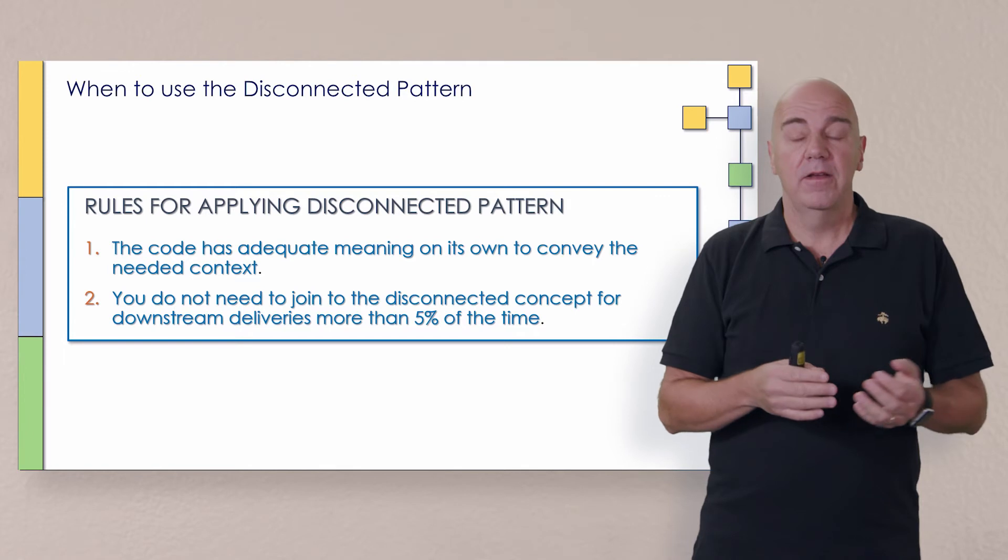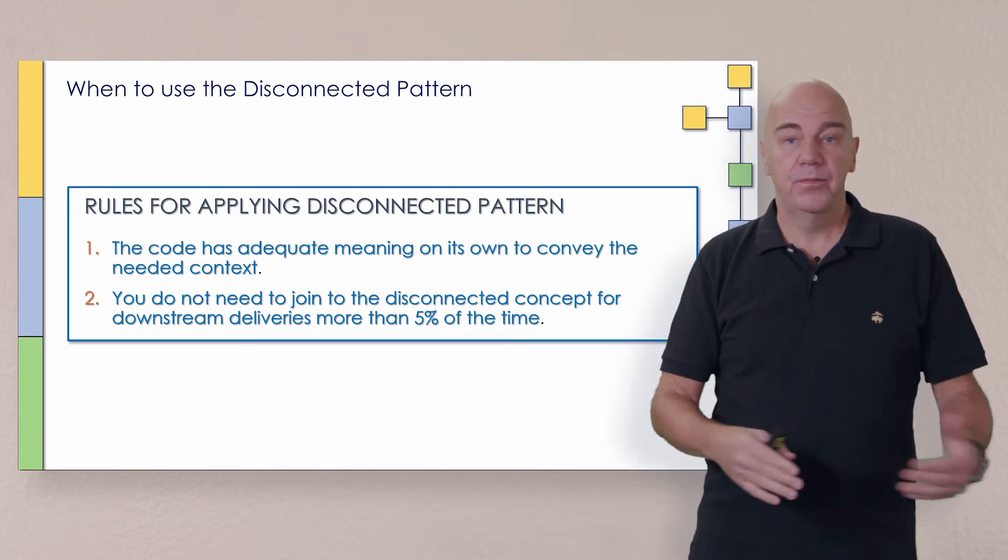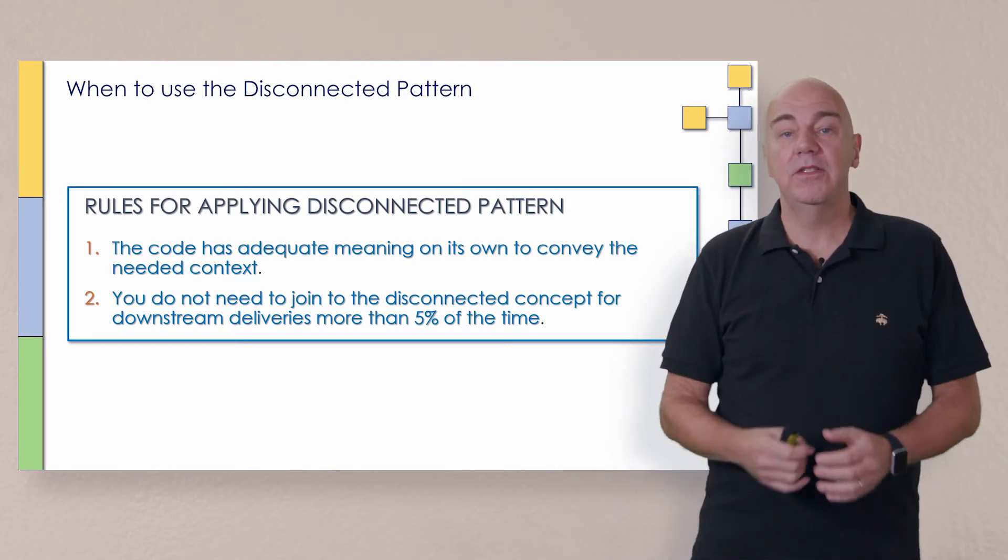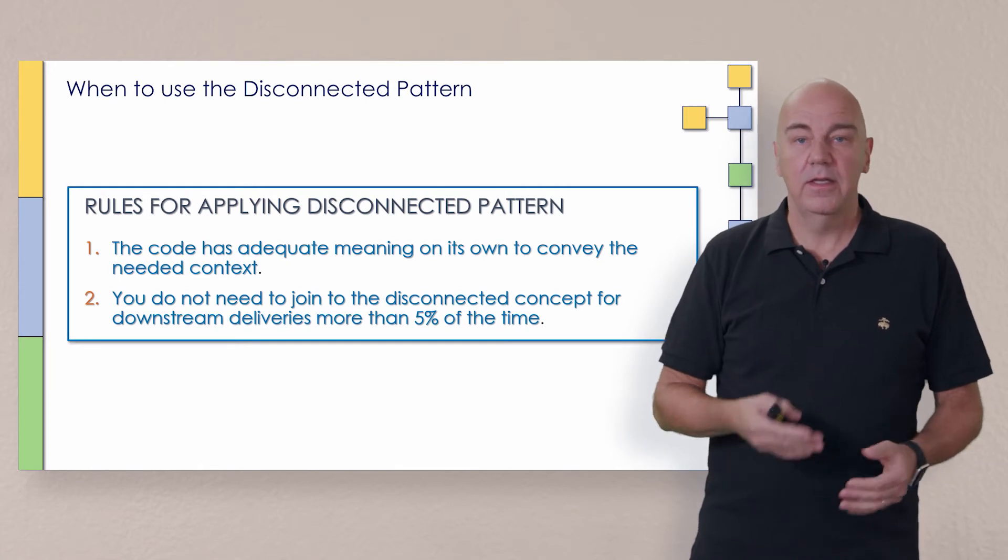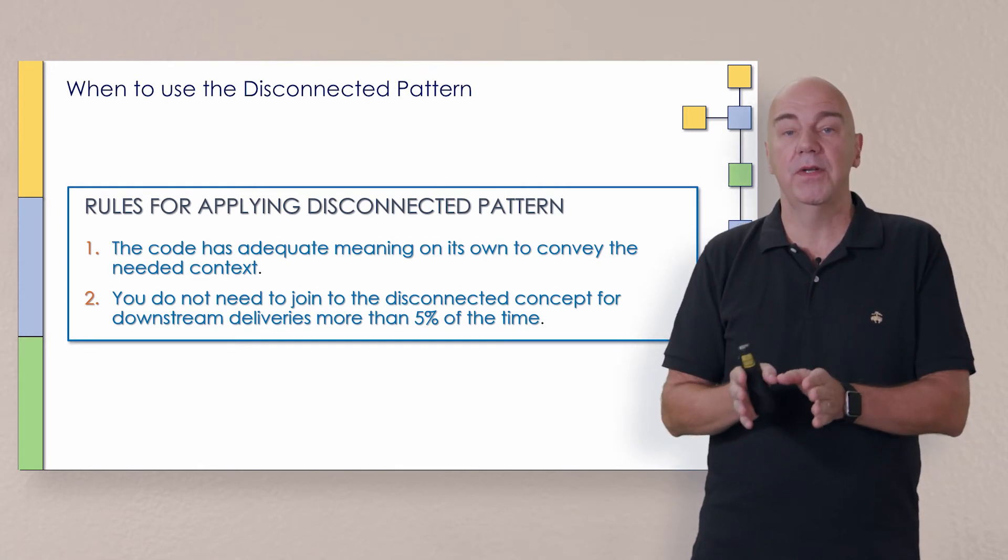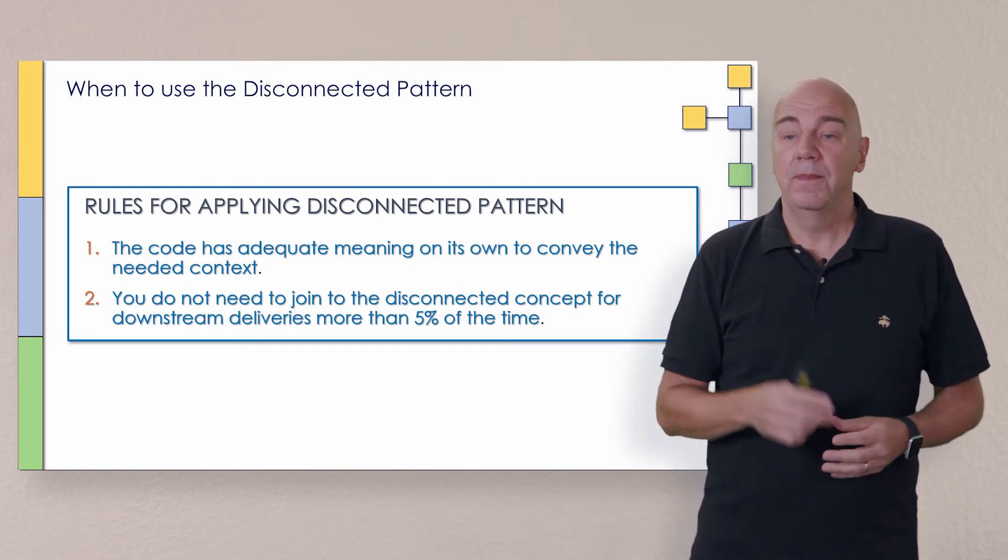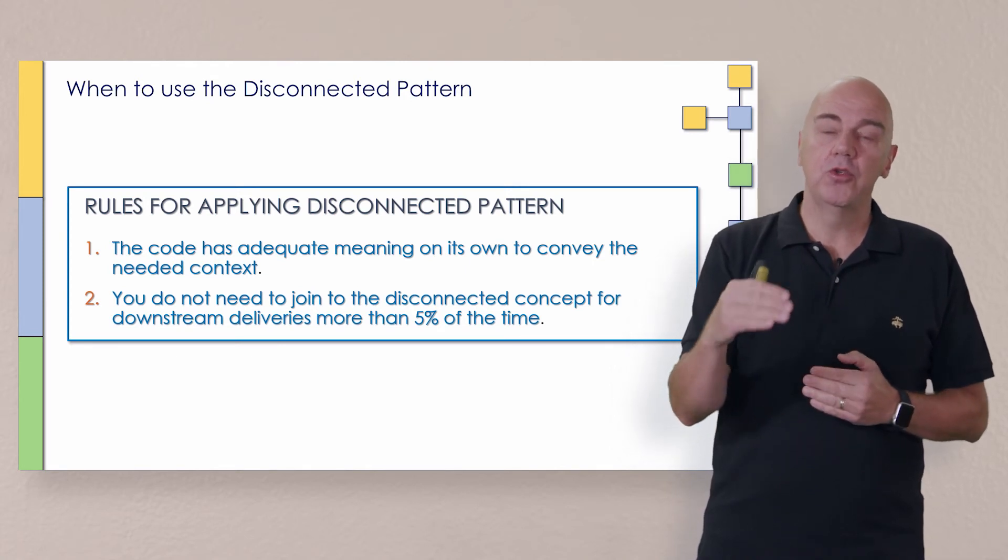So in other words, if I say customer type large, that's all you need to know. You don't need to go look it up and say, what does large mean? It's already self-descriptive enough. So that's one of the first rules.